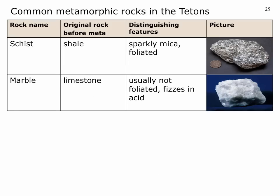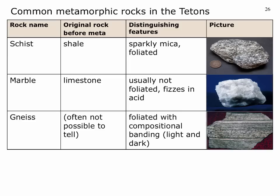Here's another rock type found in the Tetons: marble. This comes from limestone, which is made of calcite. Marble is re-crystallized calcite with a sugary, crystalline texture. During metamorphism, individual crystals get larger as metamorphism progresses, making the whole rock coarser-grained. Marble is usually not foliated because it lacks platy minerals to line up. One way to identify it is to drop acid on it — the acid reacts with the calcite and fizzes, the same reaction you'd expect for limestone.